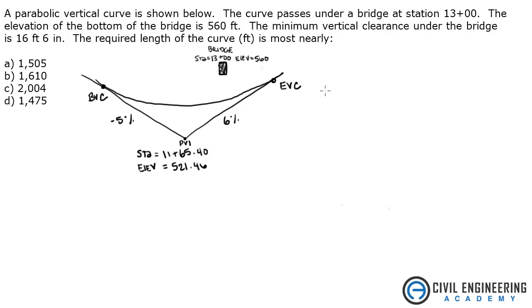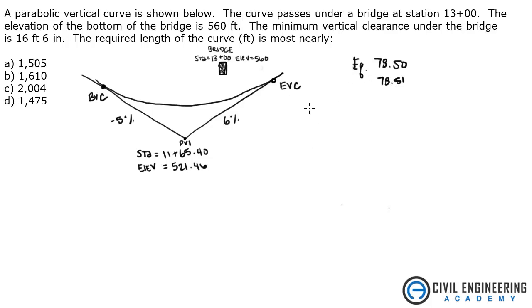If you're using your Civil Engineering Reference Manual, go to Chapter 78, and there's a section on vertical curves through points. We are going to specifically be using equation 78.50 and equation 78.51 to solve this. You can look that up if you're using the same edition that I have.